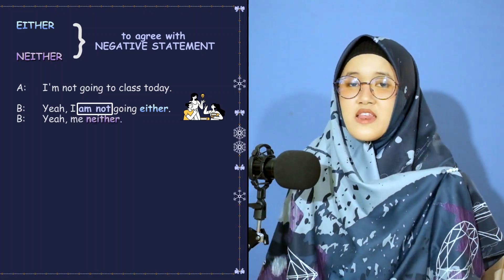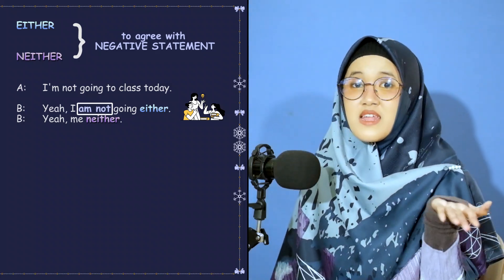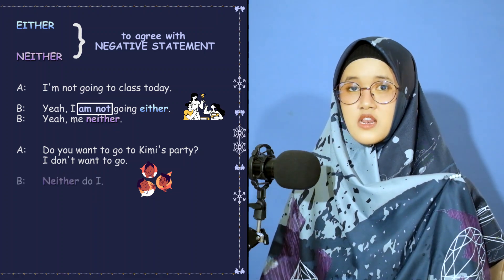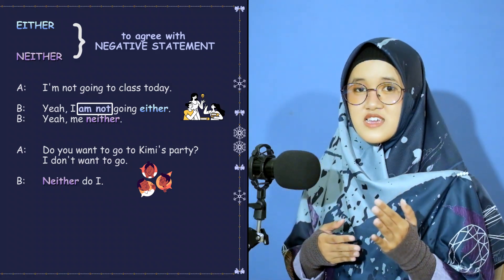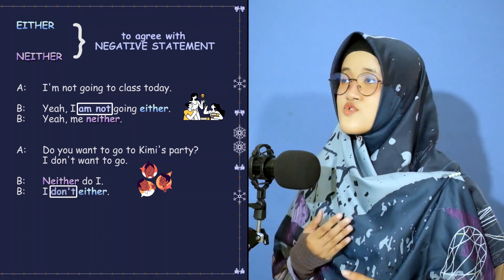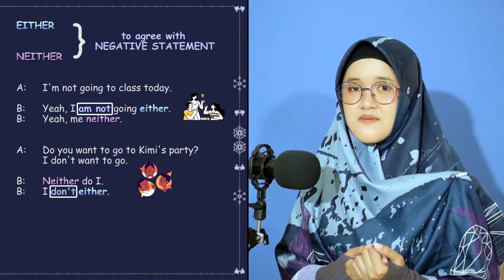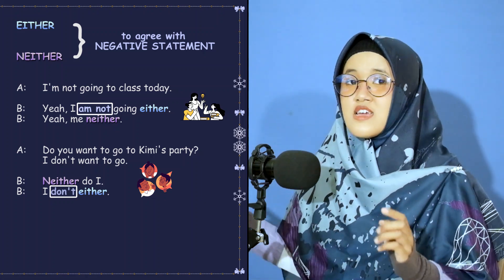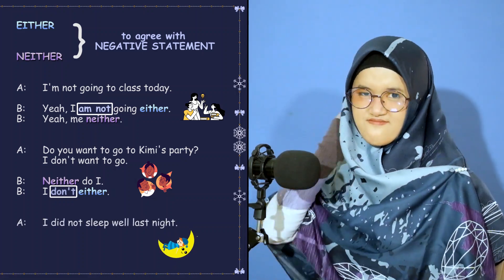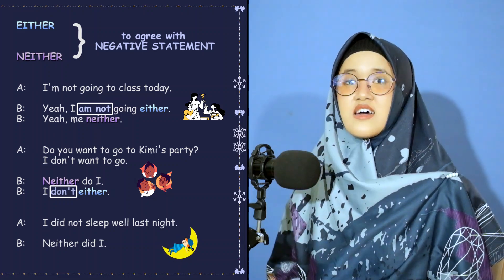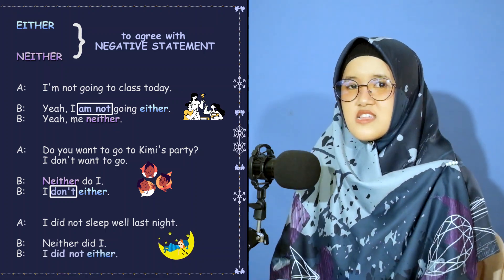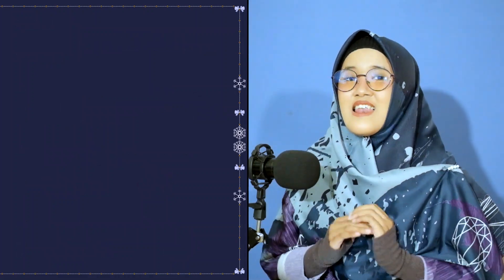'I'm not going to class today.' 'Yeah, I'm not going either.' We must use a negative word — 'I'm not' in this case. Or: 'Yeah, me neither.' You can use 'me neither.' 'Do you want to go to Kimmy's party?' 'I don't want to go.' 'Neither do I' — neither plus the same auxiliary verb plus subject. Or you can say 'I don't either.' These two replies have the same meaning; both are fine, but 'neither do I' is a little more formal. 'I didn't sleep well last night.' 'Neither did I' or 'I did not either.'